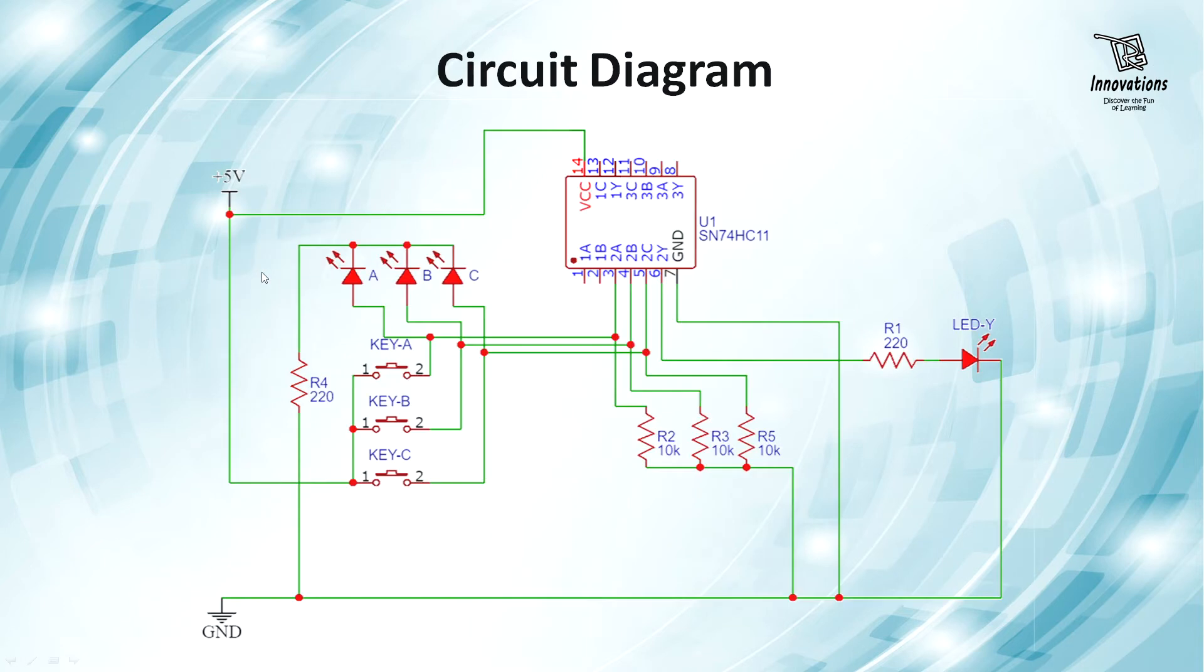Now, let us have a look at the circuit diagram. This is the 7411 IC, where we have taken segment 2 of the AND Gate, where pin number 3, 4, and 5 are inputs and pin number 6 is output. We have taken three switches A, B and C which will give the input to the IC, and we have connected three LEDs to these switches. When we press these switches, these LEDs will turn on to indicate the status of the input.